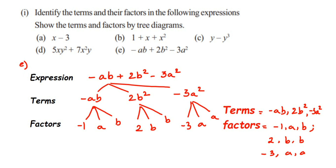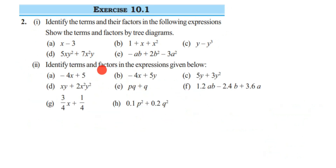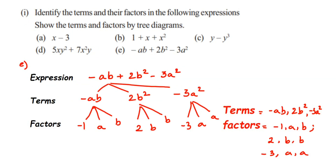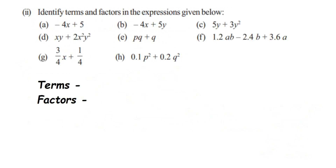Now there is a second question: identify terms and factors in the expressions given below. We just have to identify which is a term and which is a factor — no tree diagram is needed for this question. The first expression is minus 4x plus 5. The terms are minus 4x and 5. For minus 4x, minus 4 is the numerical coefficient and x is the variable, so the factors are minus 4 and x. For the second term, it is a constant, so the factor is 5 itself.